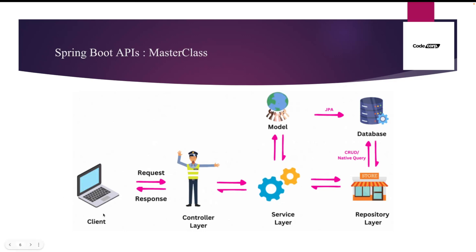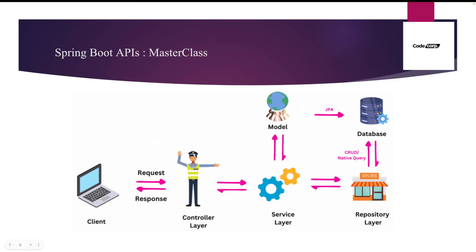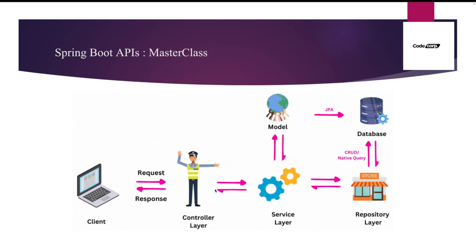As you can see from the previous video, I created one controller which was getting some requests. One endpoint was getting a name and returning the length, and the other two endpoints were addition and product. So let me tell you how applications work in real time. The client — suppose a browser or Postman — hits a request to the controller, which is the endpoint through which the outer world connects to your application.